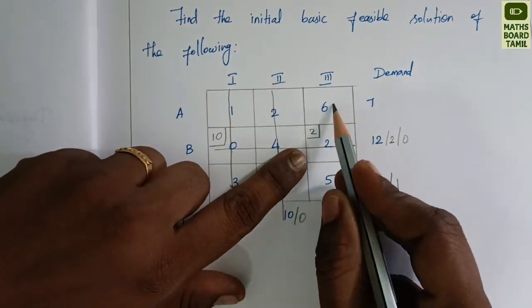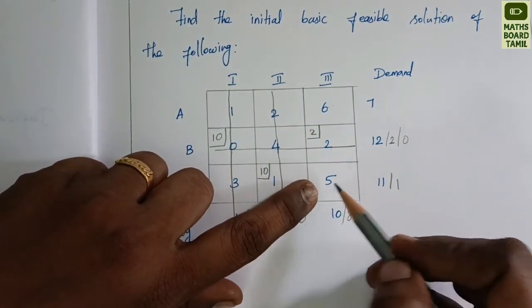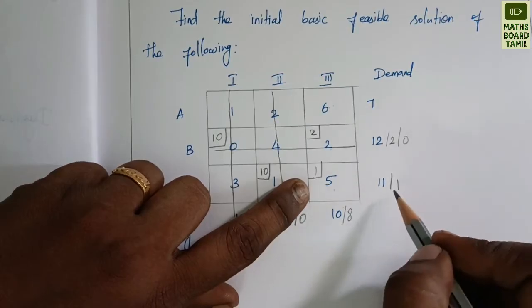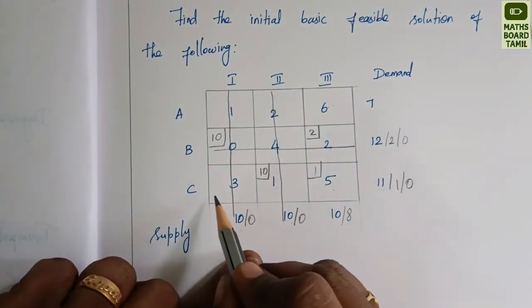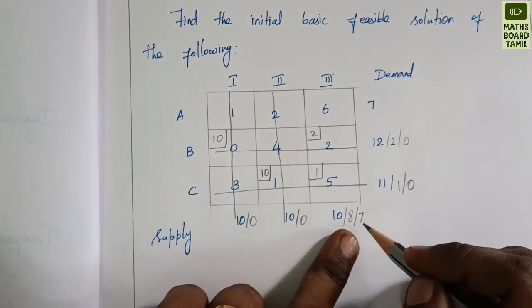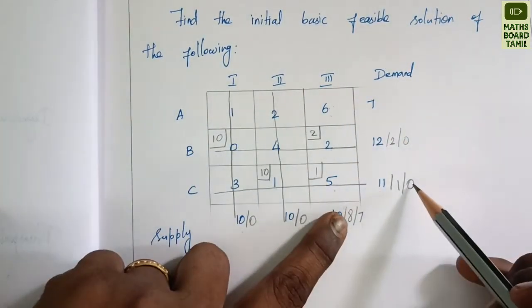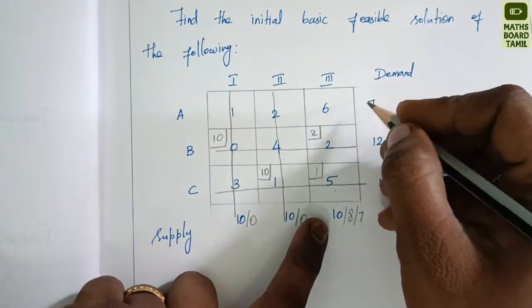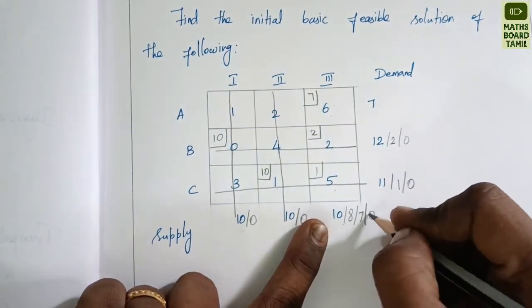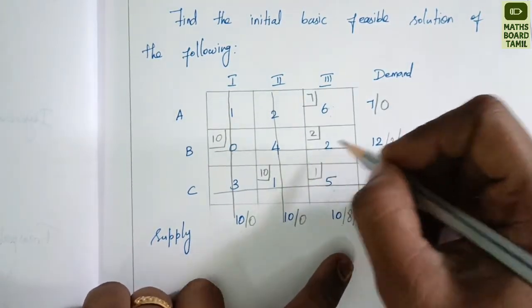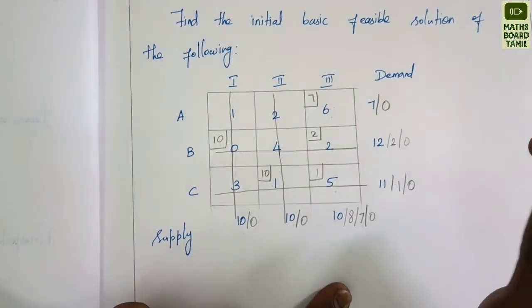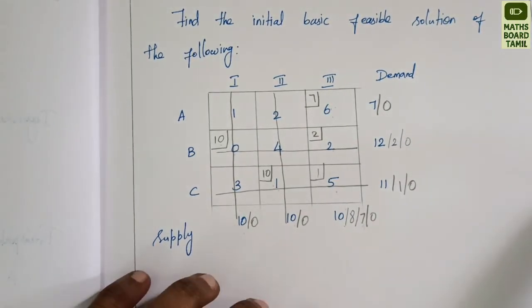Demand is equal to 2 and supply is equal to 10. After allocation, 2 minus 2 equals 0 and remaining is 8. Demand 1 is equal to 8, then 1 minus 1 equals 0, and 7 minus 7 equals 0. We now have 5 allocations in total: 1, 2, 3, 4, 5. We check for degeneracy, find the transportation schedule, and then find the total cost.